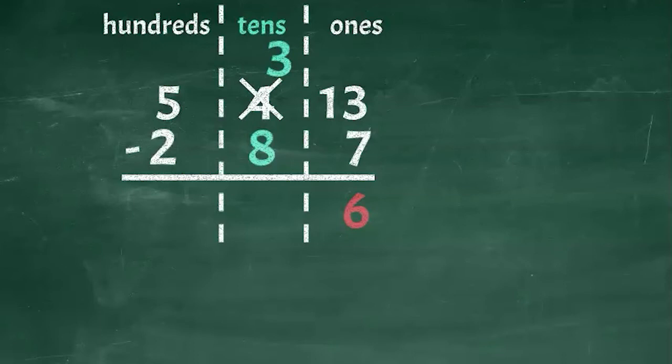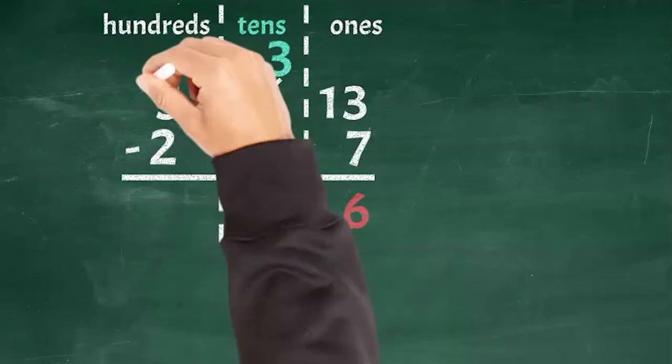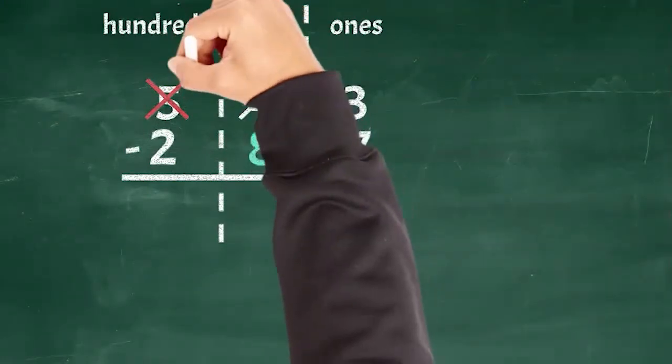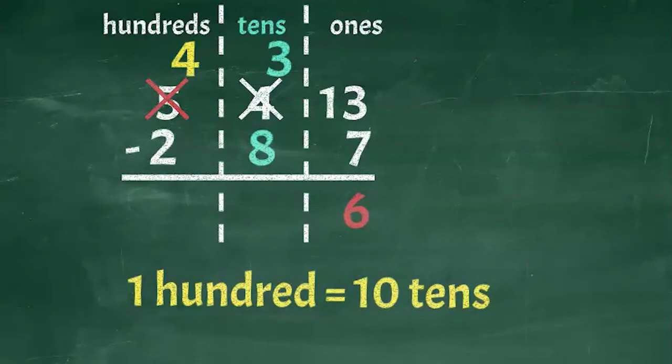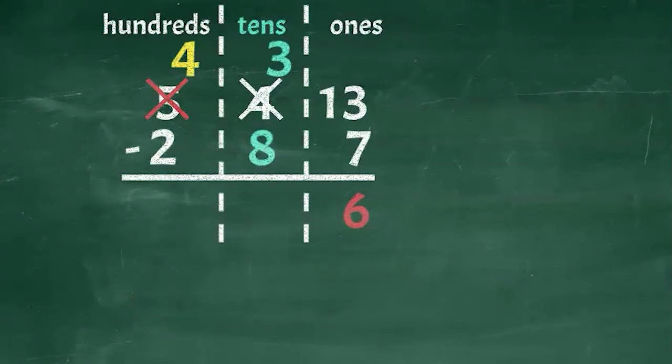But now I know what to do. I will borrow from the hundreds place. First I will cross out the five and change it to a four. Then I need to exchange that 100 for ten tens. I will show that by writing a one in front of the three that's in the tens place right now. Now I can subtract eight tens from 13 tens.